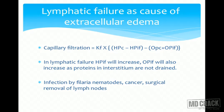Lymphatic failure or obstruction causes edema in two ways. First, interstitial fluid is not drained, so the normally negative interstitial hydrostatic pressure turns positive, opposing filtration but retaining excess fluid. Second, lymphatics normally remove plasma proteins that have filtered into the interstitium. If they are not drained, plasma proteins accumulate in the interstitium, exerting osmotic pressure that draws more fluid out, worsening edema.